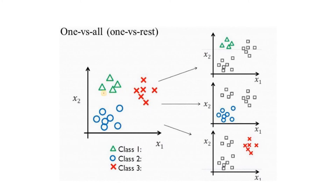This image represents the whole algorithm. Suppose we have three classes: Class 1 (triangles), Class 2 (circles), and Class 3 (crosses). A new data point comes in with known x1 and x2 values, and we need to determine which class it belongs to. Since SVM creates linear separation between two classes, we handle three classes by creating three separate SVM models — one per unique class.